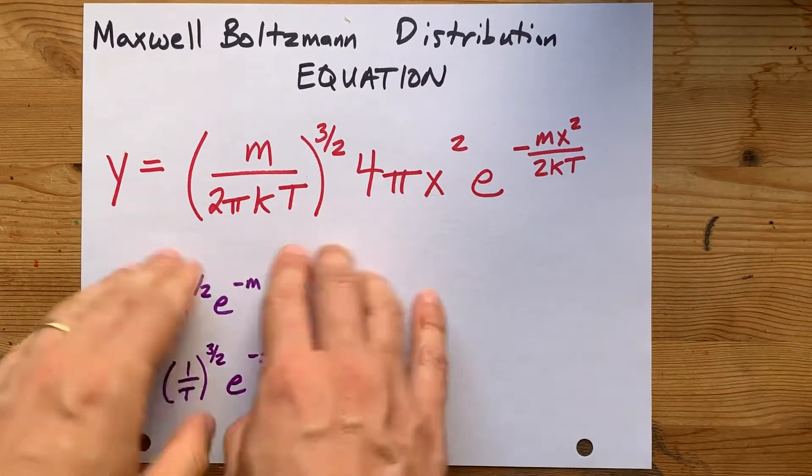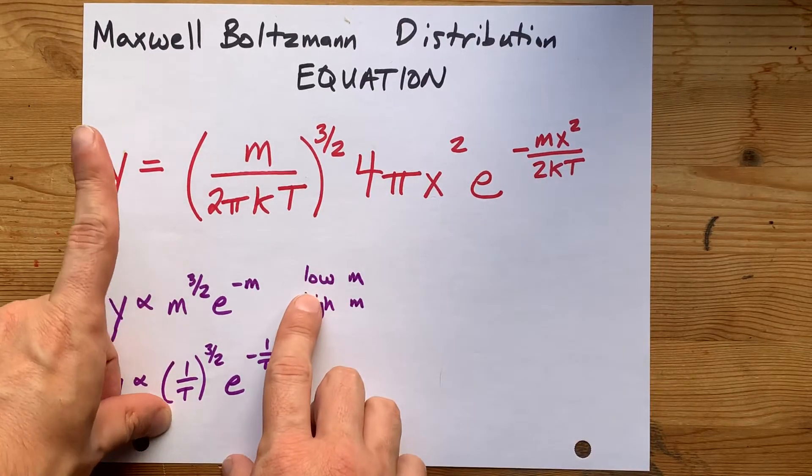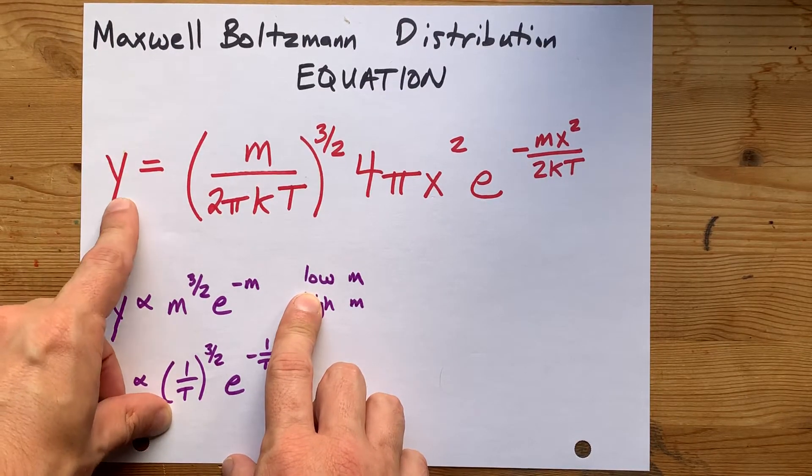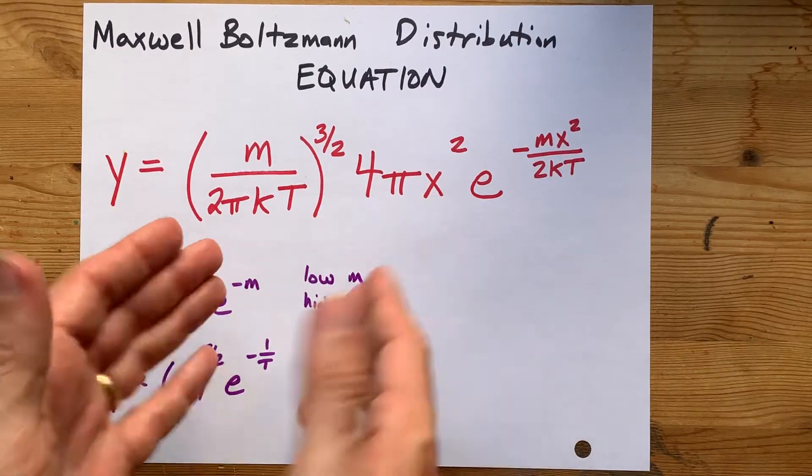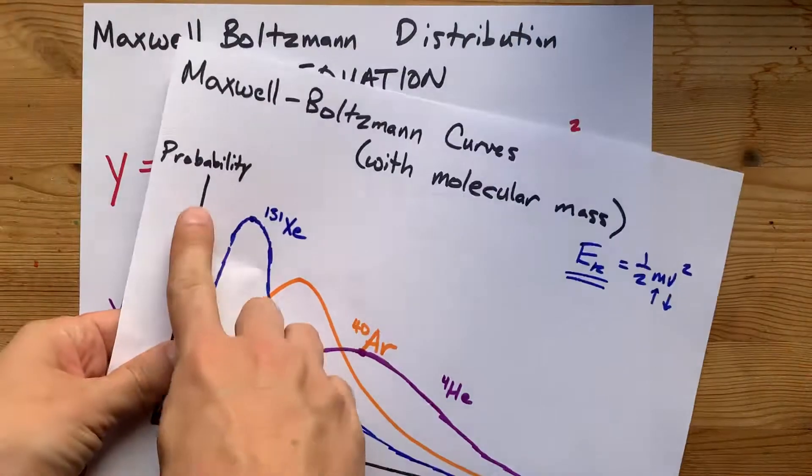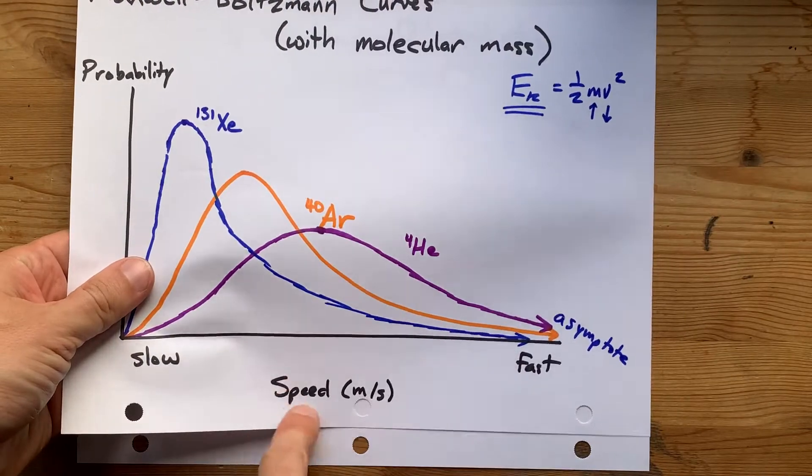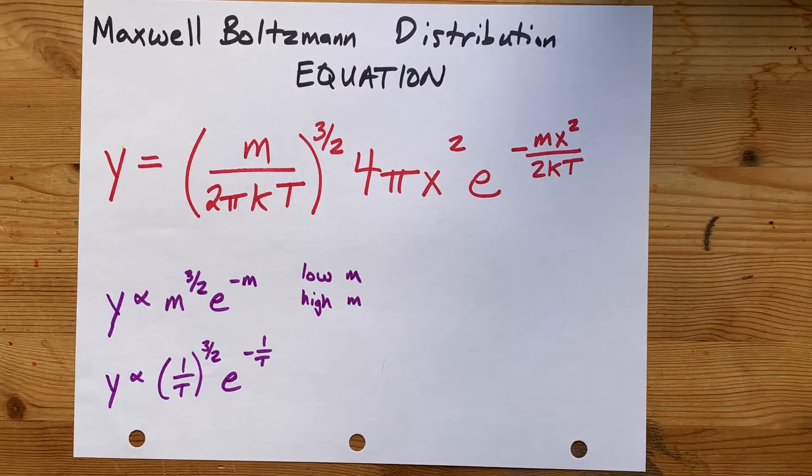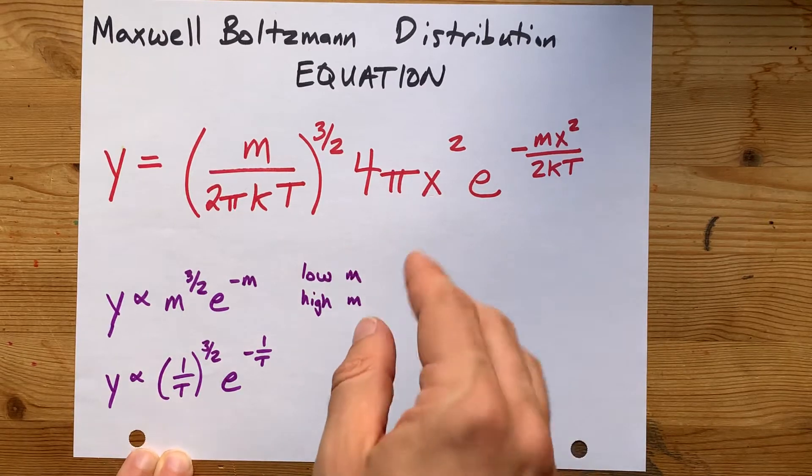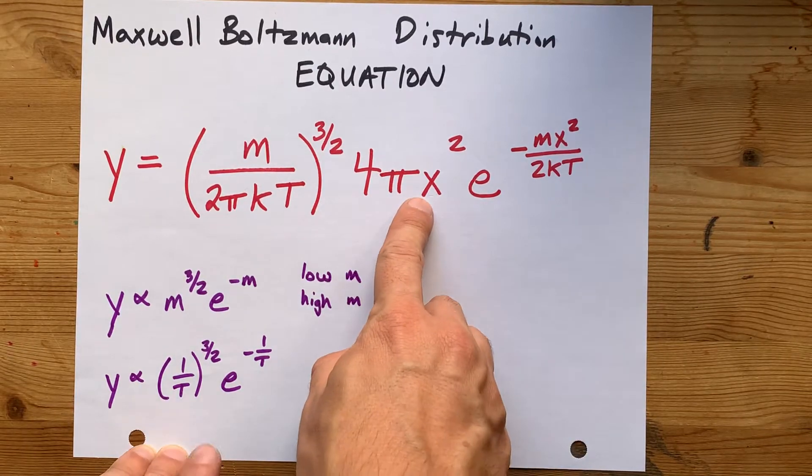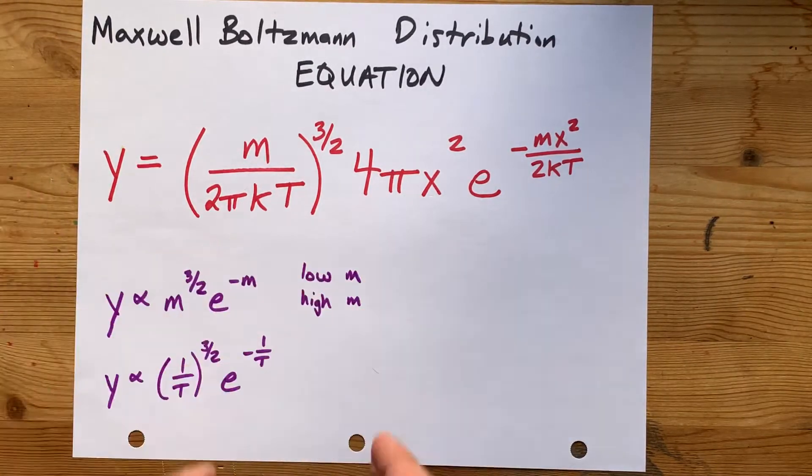Now what I've done here is written out the entire equation for the probability that a particle is traveling at a certain speed. After all, a Maxwell-Boltzmann distribution is a probability density function that is based off of the speed of the particle. Lots of textbooks will write V here for velocity of the molecule. I'm using X because I think it's more intuitive for high school math students.